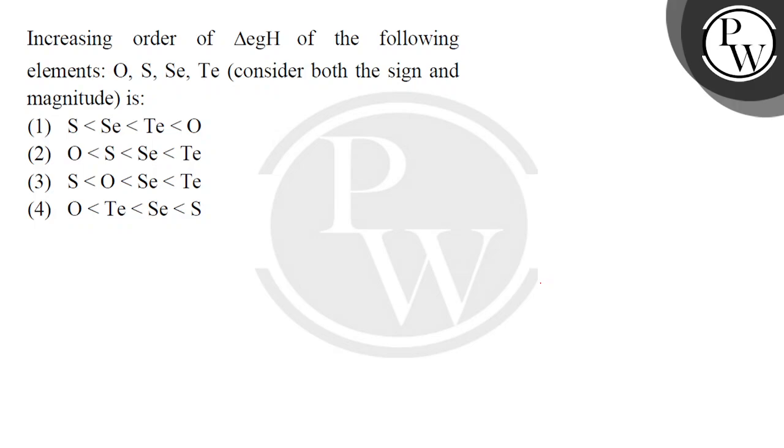Hello children, let's read the question. Increasing order of electron gain enthalpy of the following elements: oxygen, sulfur, selenium, tellurium - group 16 elements.